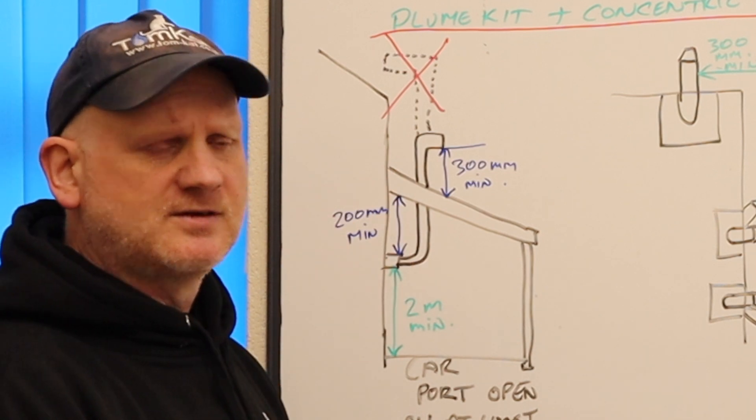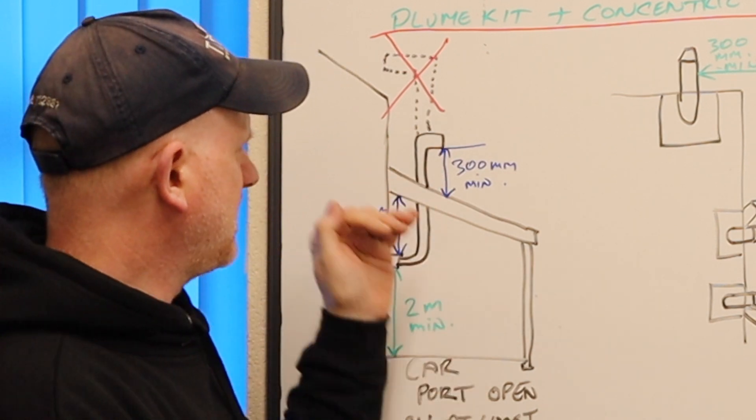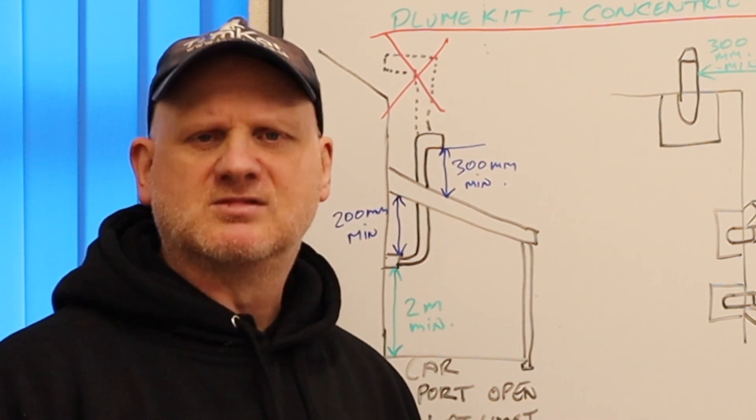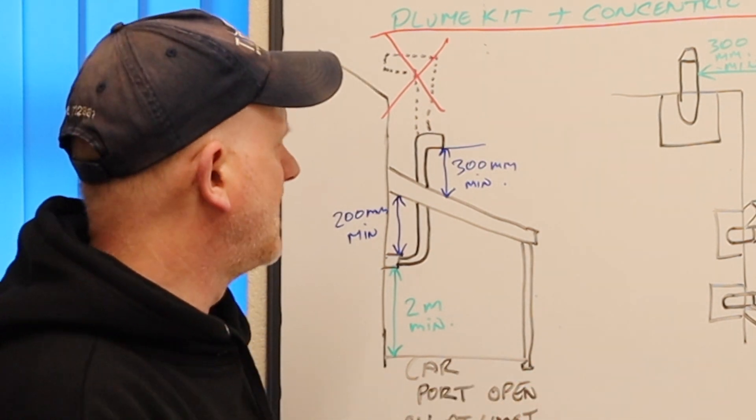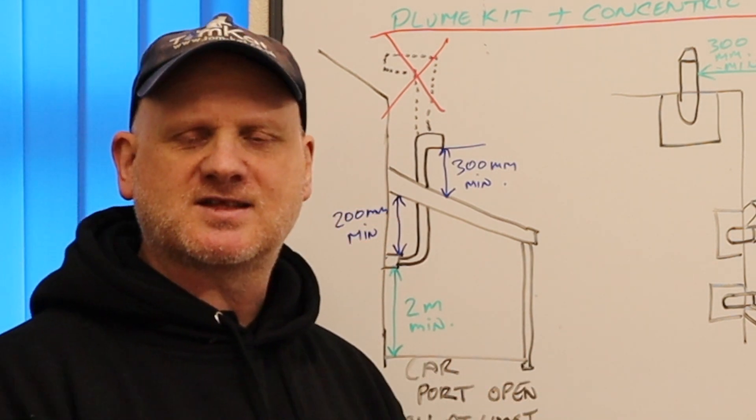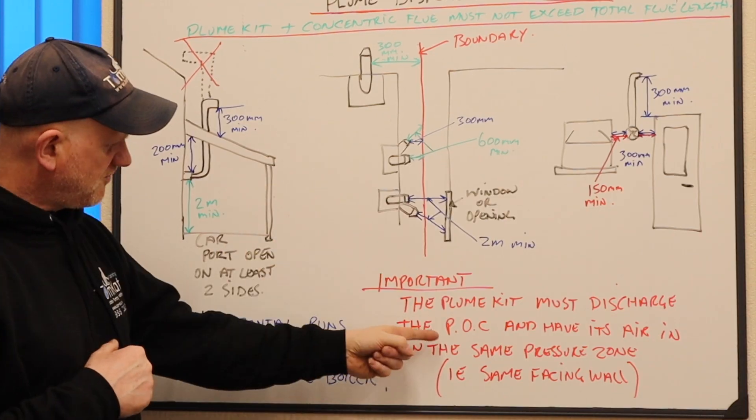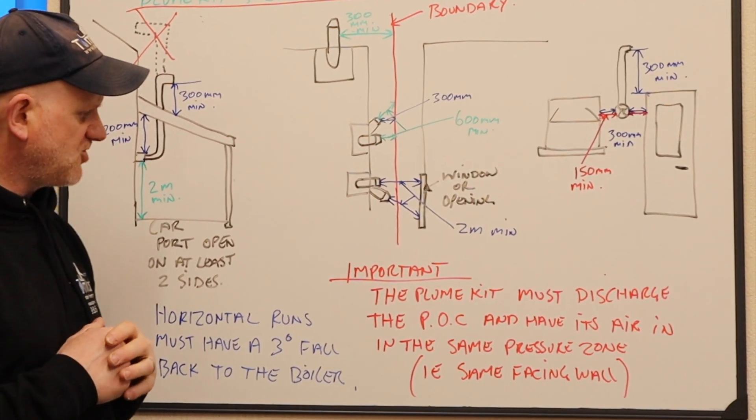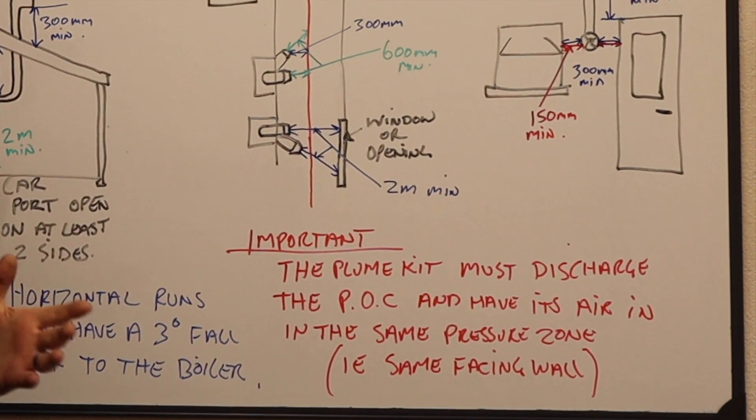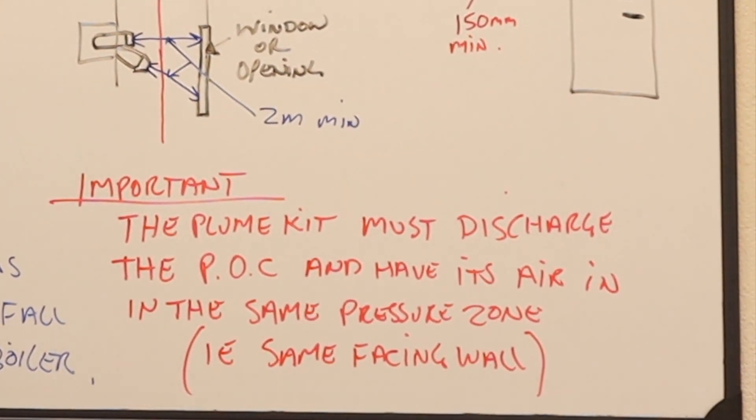So when we come above the roof, we must be 300 above the pitch of the roof like we would be from ground level to stop snow and leaves and rain bouncing back in there. The other major thing is it has to face the same way as the air inlet because, like I've put here, the plume kit must discharge its products of combustion and have its air in in the same pressure zone. That basically means facing the same way on the wall.